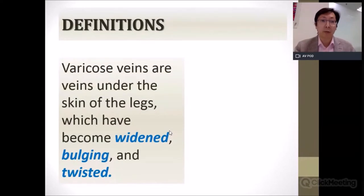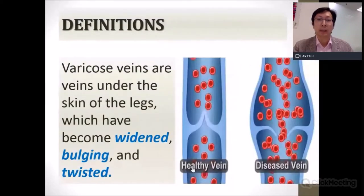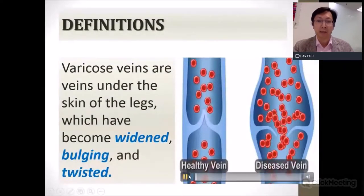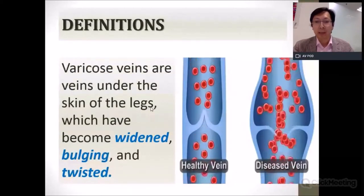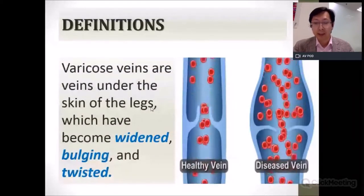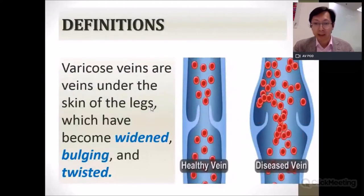As we all know, varicose veins are large veins under the skin of the legs. You can see in these pictures that they are bulging, widened, and twisted. This video shows the valves of a healthy vein on the left side, which closes and opens properly, and the diseased vein on the right side, where the valve is not closing properly and there is a leakage of blood in that particular vein.